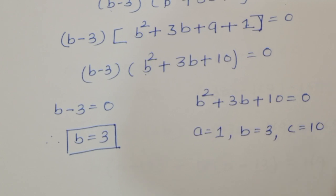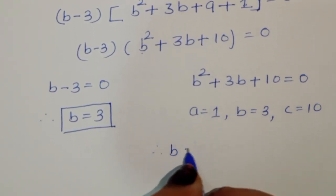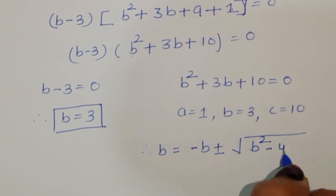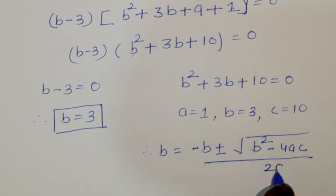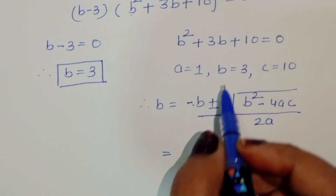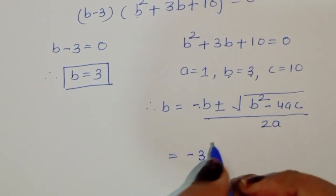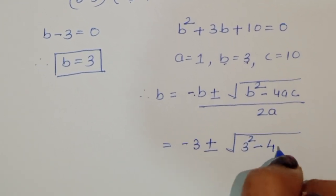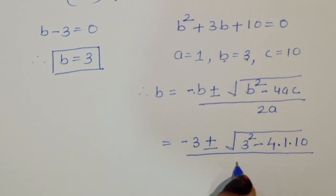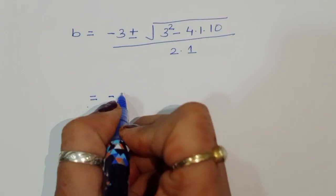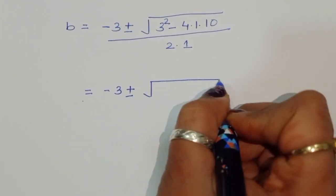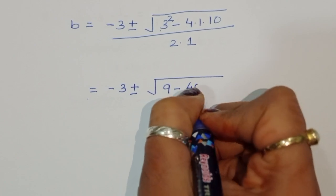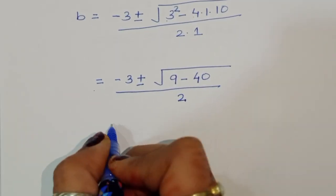For the quadratic equation b² + 3b + 10 = 0, we have a = 1, b = 3, and c = 10. Using the quadratic formula: b = (minus b ± √(b² minus 4ac)) divided by 2a, we get: b = (minus 3 ± √(9 minus 4 times 1 times 10)) divided by 2.